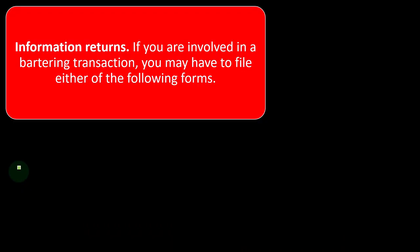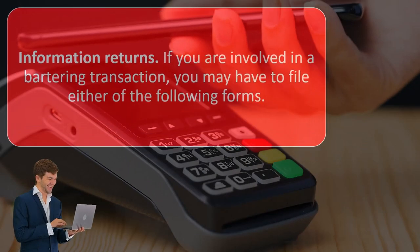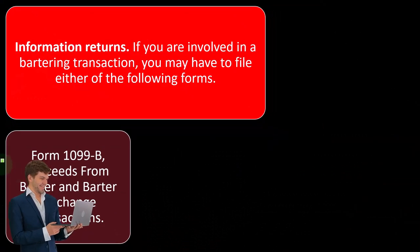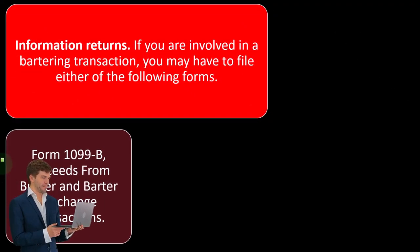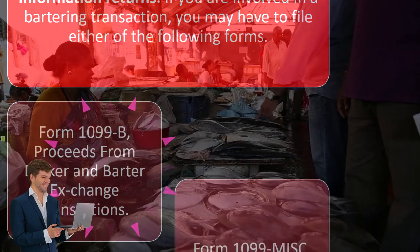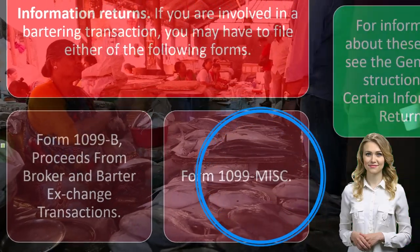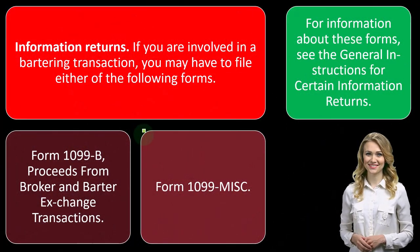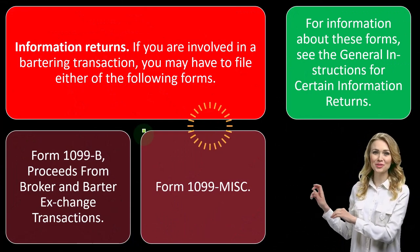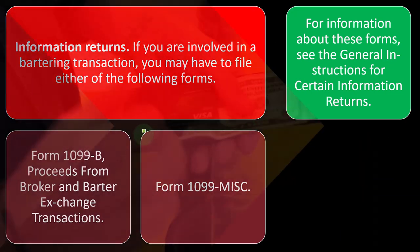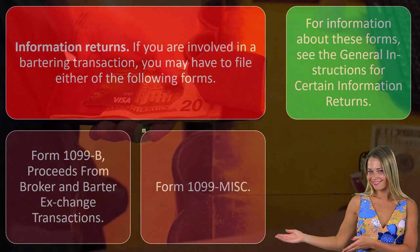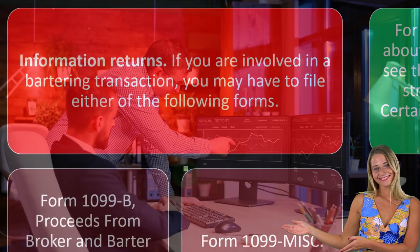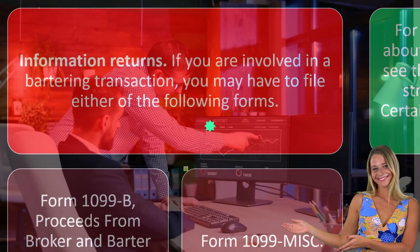Information returns: if you are involved in a bartering transaction, you may have to file Form 1099-B, Proceeds from Broker and Barter Exchange Transactions, or Form 1099-MISC. These are the reporting forms for bartering situations. The IRS wants to pressure the payer to report income to the person who received it, to double-check that they report their income.